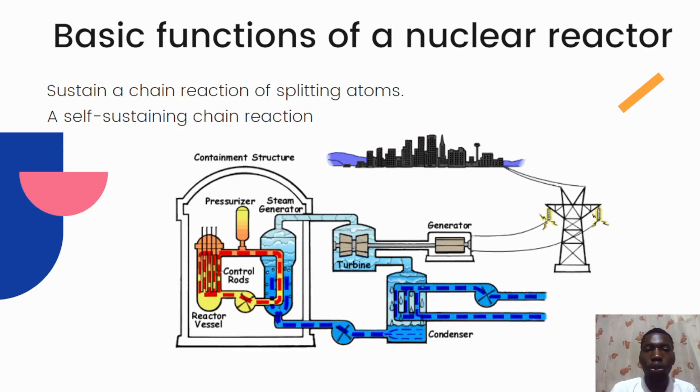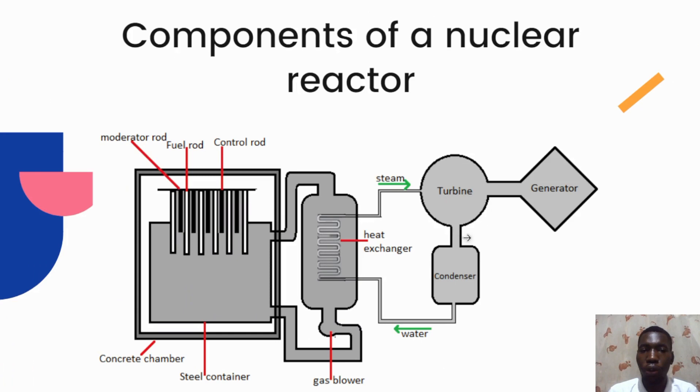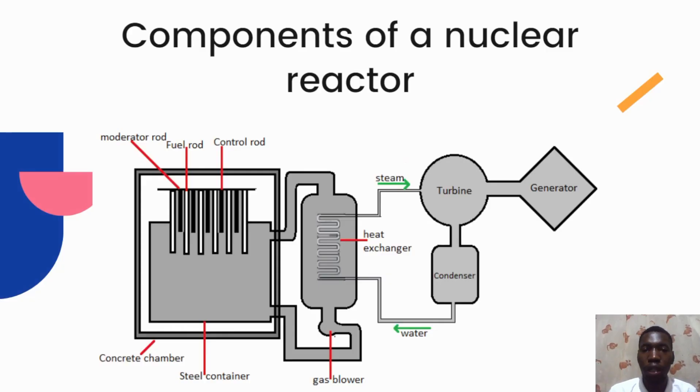So next, what are the components of a nuclear reactor? A nuclear reactor contains several components, but we'll just take a look at the key ones, which include the fuel, the moderator, the coolant, and the control rods. The fuel is typically enriched uranium, which is formed into fuel pellets or fuel rods and arranged in a core.